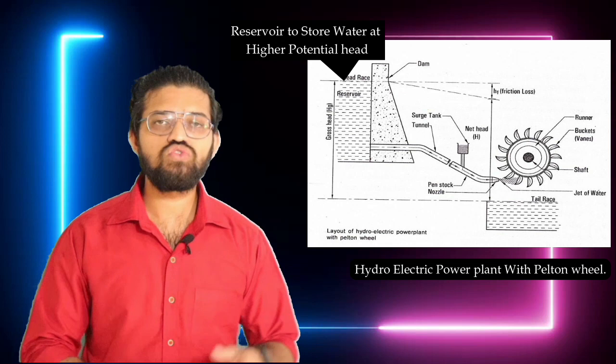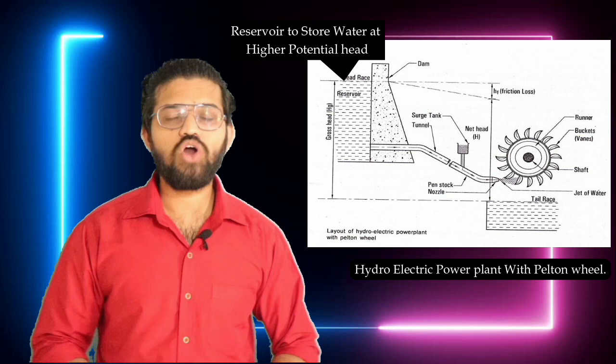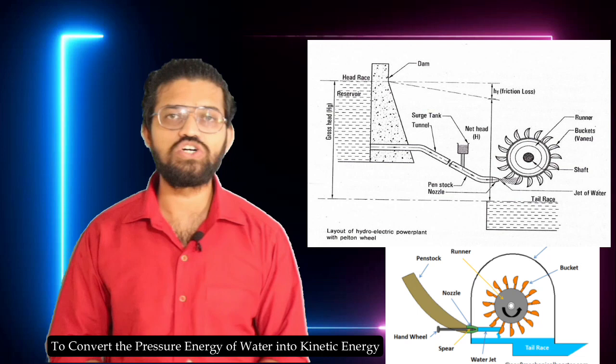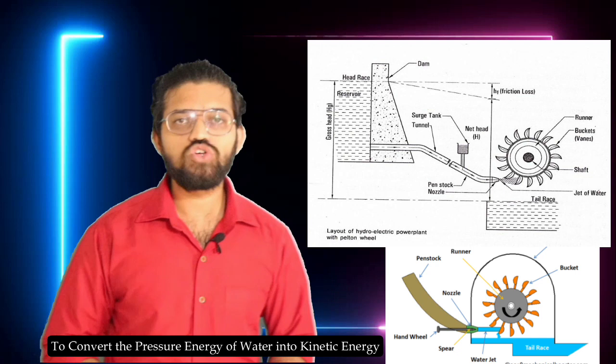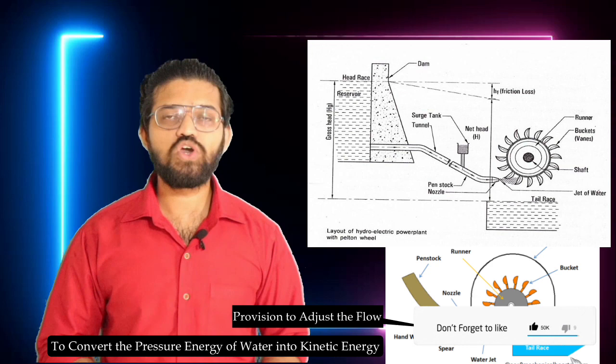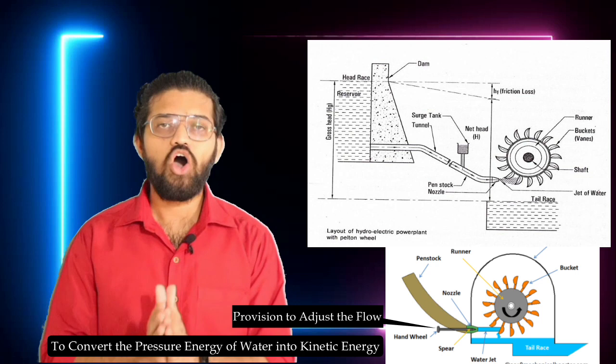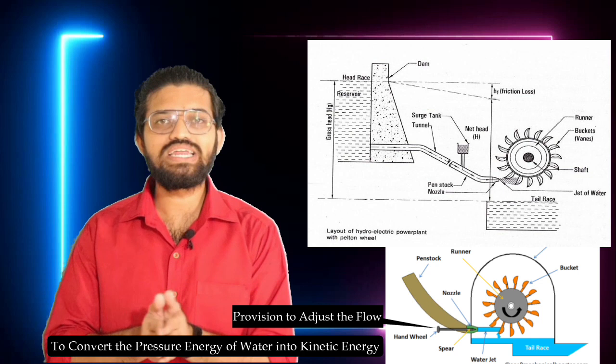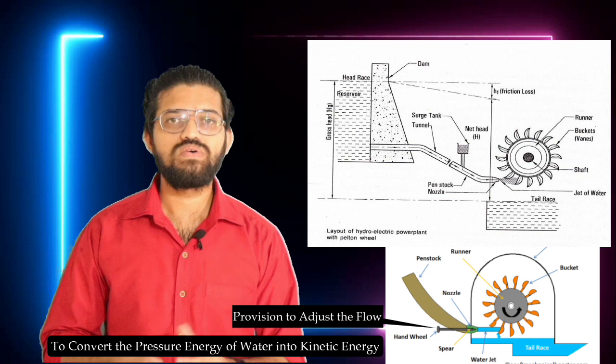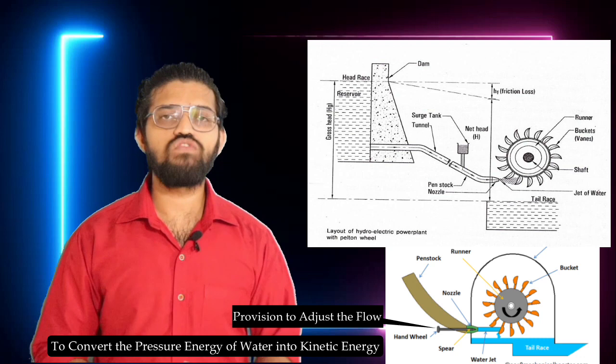This water is allowed to flow through the penstock, and at the end of the penstock there is a nozzle. The main function of the nozzle is to convert the pressure energy of the water into kinetic energy, increasing the velocity of the water. The nozzle also has a screw assembly that allows us to increase or decrease the discharge — that is, the flow rate — through the nozzle.